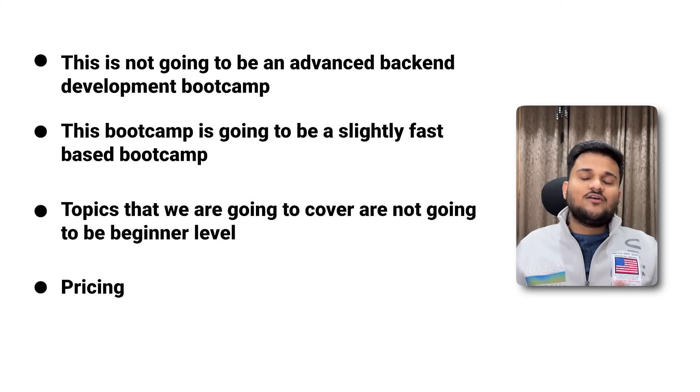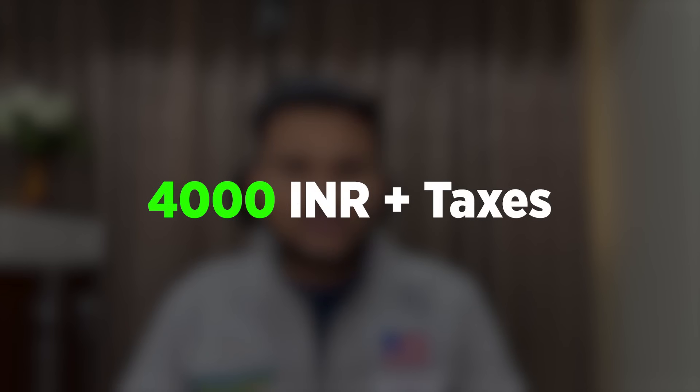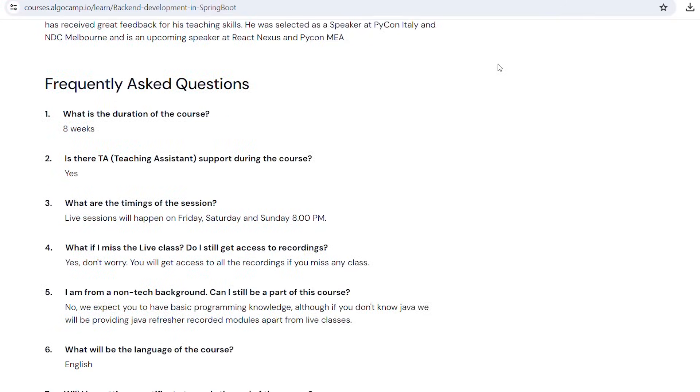The next major pointer is the pricing. We have kept the pricing very aggressive. As of now, if you apply the coupon code 'early bird', you can grab the course for 2,500 INR plus taxes. This code is going to be valid for the initial few days. Post that, the course price should go to a max of 4,000 plus GST. We have kept it around 2,500 to 2,700 because it's a shorter course. We are going to have classes three days a week in the evening. All these details around which days and timing you can find in the FAQ section of the course. I'd highly recommend checking out the course link in the description and using the coupon code 'early bird' to get a massive discount on the initial days of this course launch.